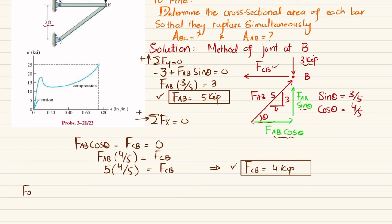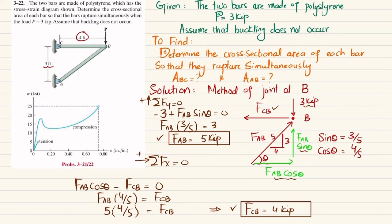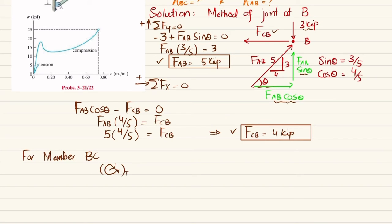So for member BC, you can see due to the load this member BC will be in tension. So for rupture we will take the maximum stress which will be 5 ksi. So rupture stress for tensile is 5 ksi. And we know that rupture stress for tensile is equal to force BC divided by area of BC. So we are interested to find out the area.